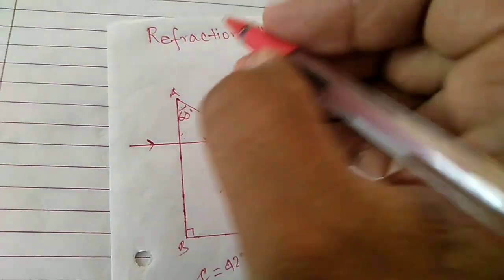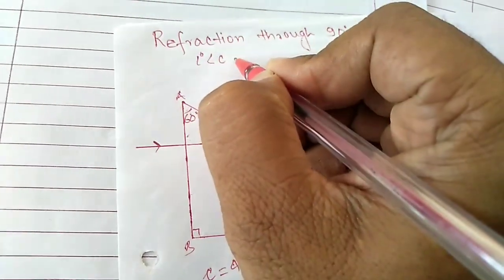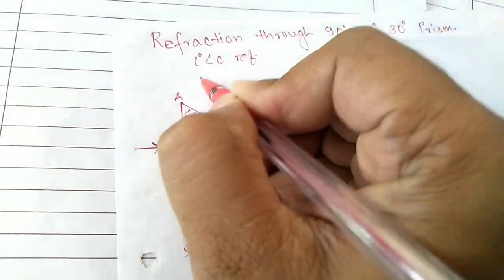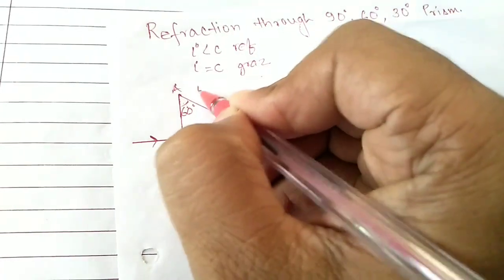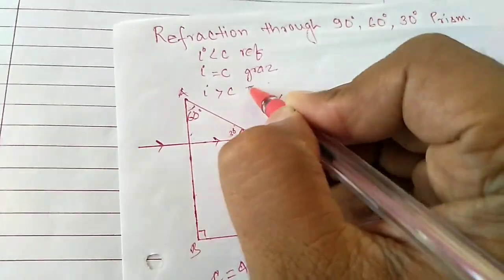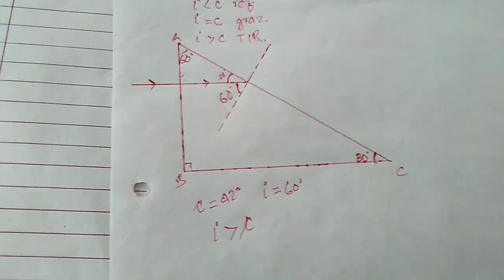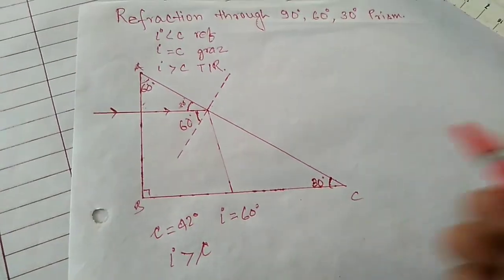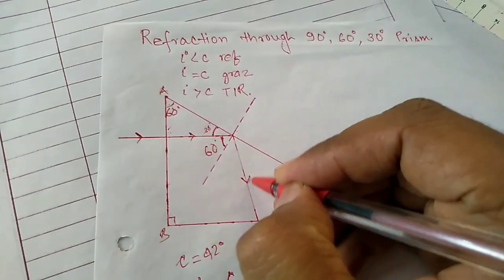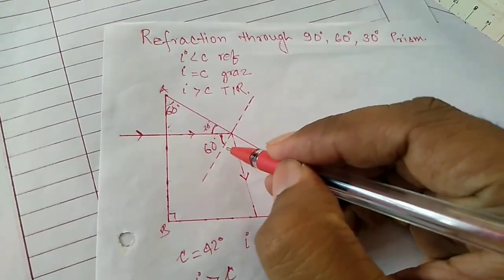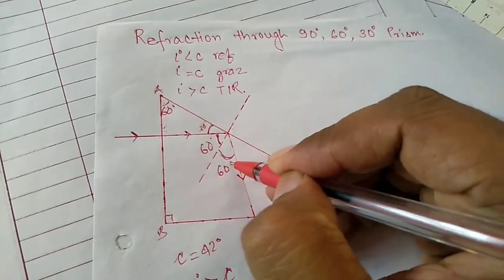If I is less than C, then refraction. If I equals C, then light will graze. And if I is greater than C, then total internal reflection. So here, total internal reflection will happen, and the light goes in this direction. The rule says angle I equals angle R — means the angle of incidence is 60, and the angle of reflection will also be 60.